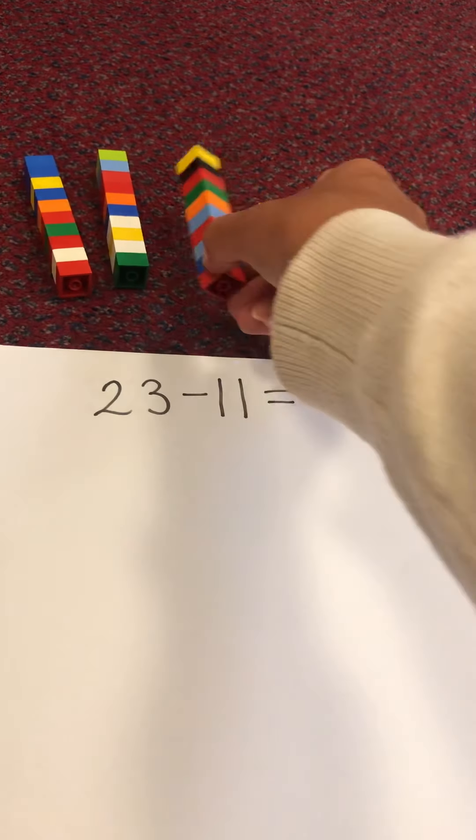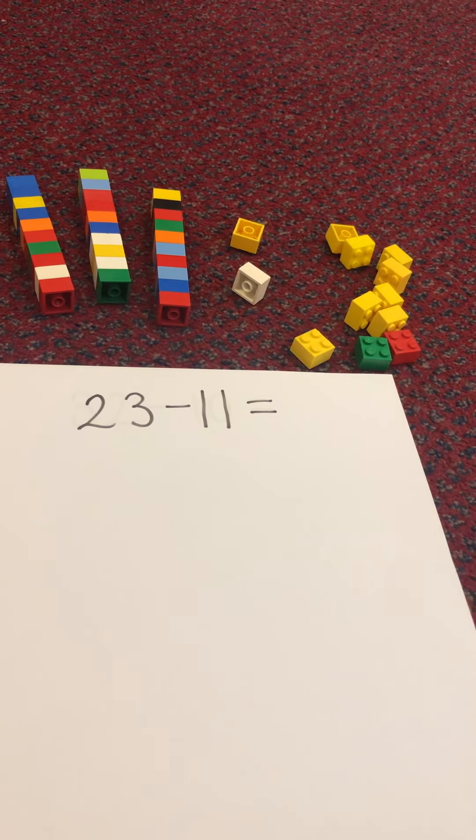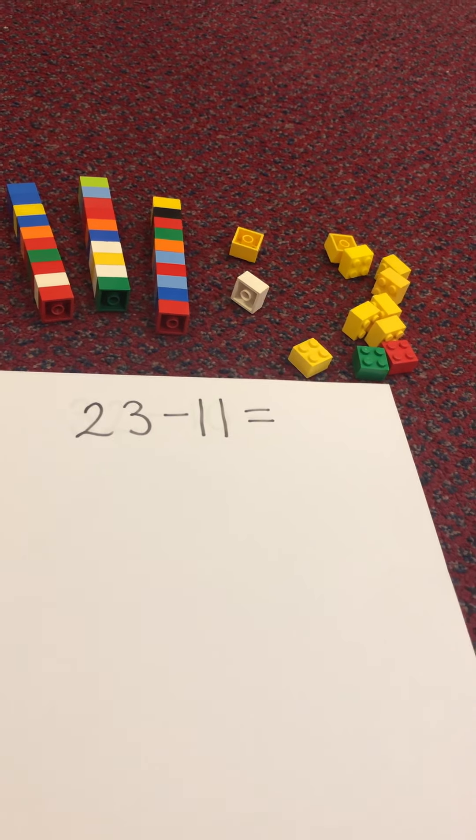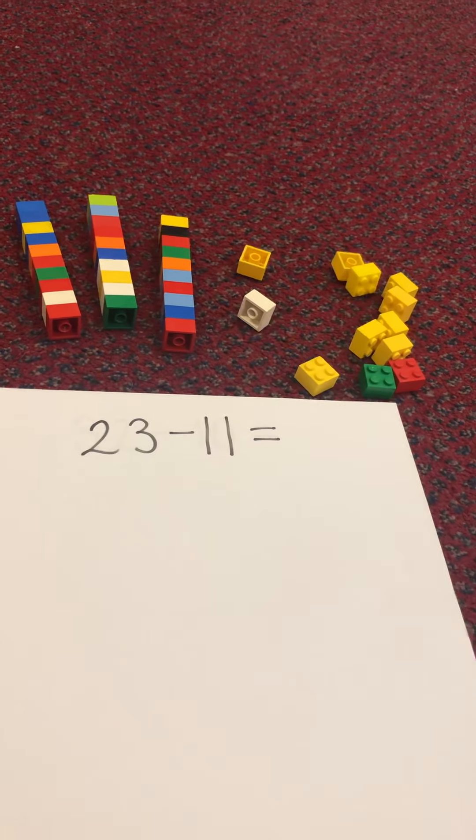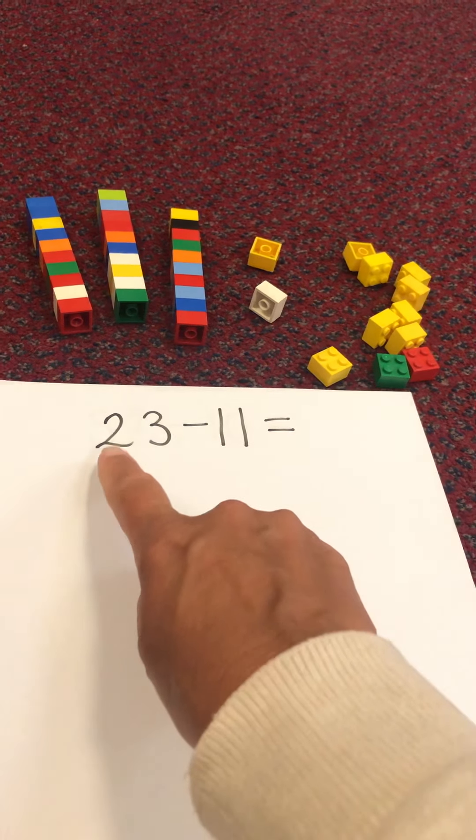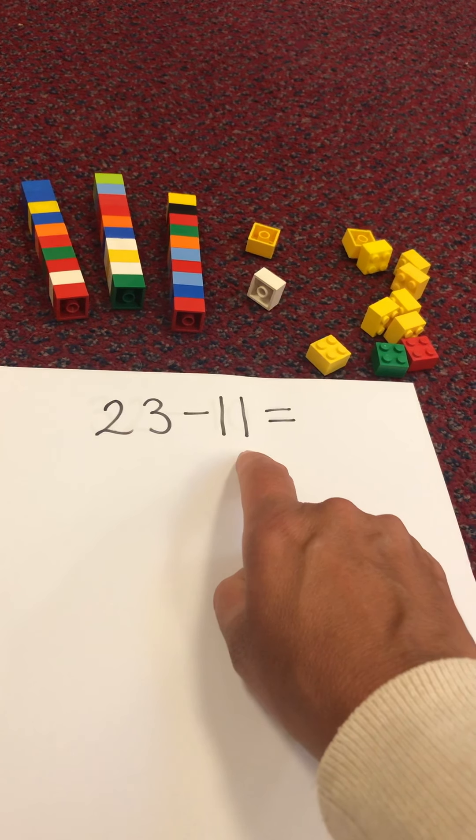Now you can use other things to help you at home. You could put ten lollipop sticks together, you could put ten straws or ten pencils together, or you could use some groups of pasta or beads. So our first subtraction says 23 take away 11.